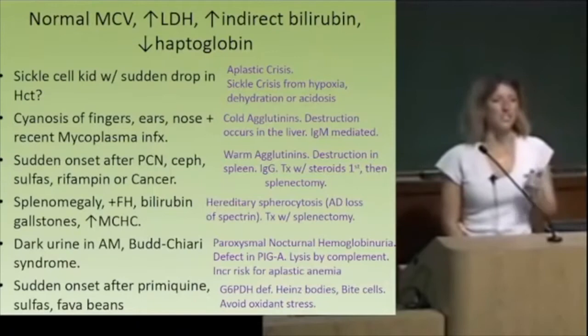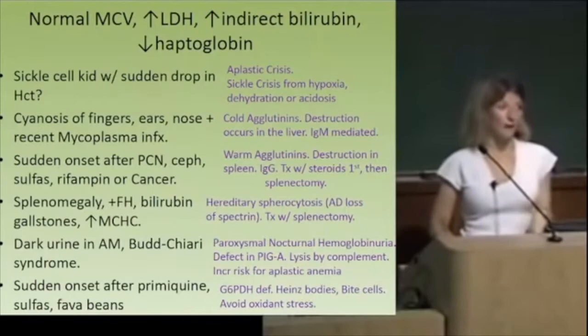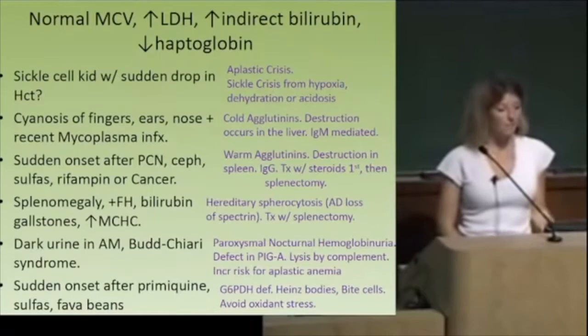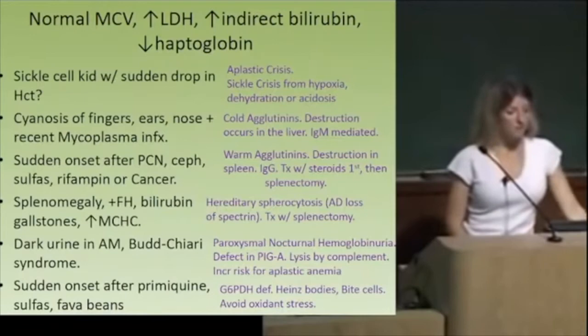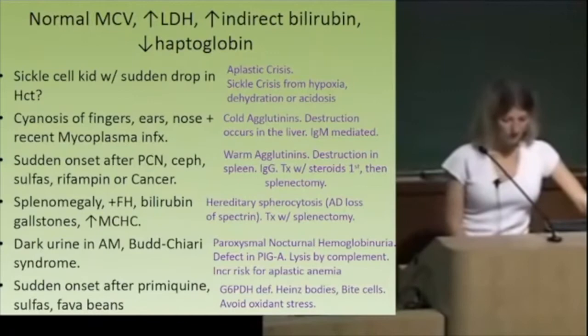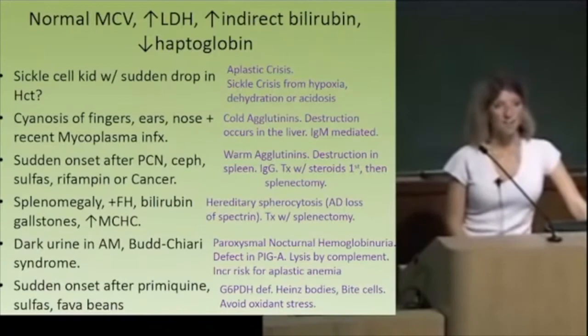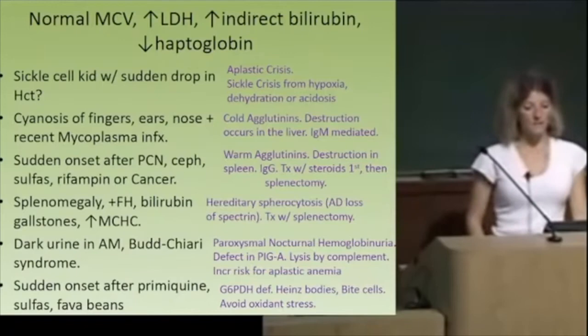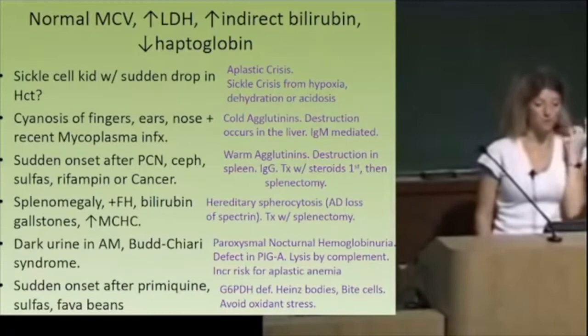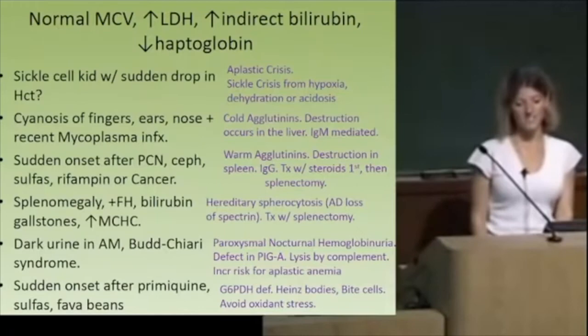G6PD can be precipitated by sulfas — I was trying to get at warm agglutinin disease. Warm agglutinin disease is caused by either a drug reaction or an underlying malignancy, and instead of IgM it's mediated by IgG. If the spleen is big, there's a positive family history, bilirubin gallstones, and the mean cell hemoglobin concentration is high — that's hereditary spherocytosis. You treat that by splenectomy. If they complain of very dark urine when they first wake up, they might have Budd-Chiari syndrome or PNH — paroxysmal nocturnal hemoglobinuria. Sudden onset of hemolytic anemia after primaquine, sulfa drugs, or fava beans — that's G6PD dehydrogenase deficiency.